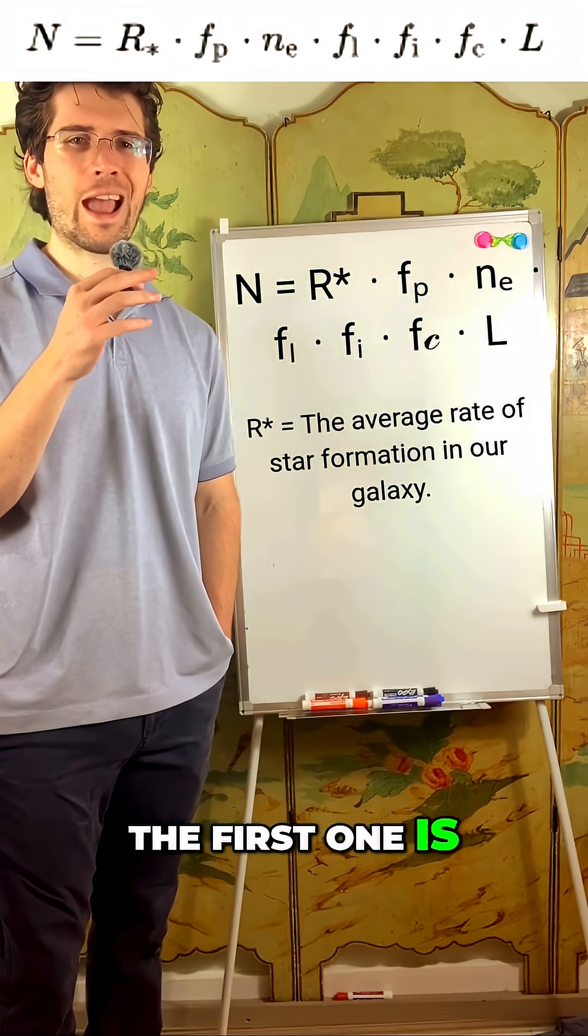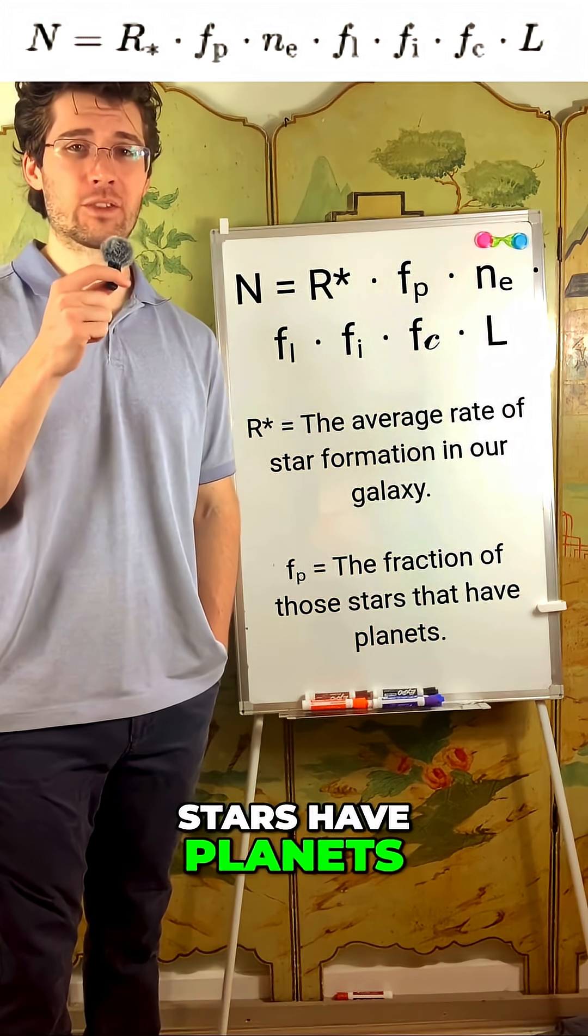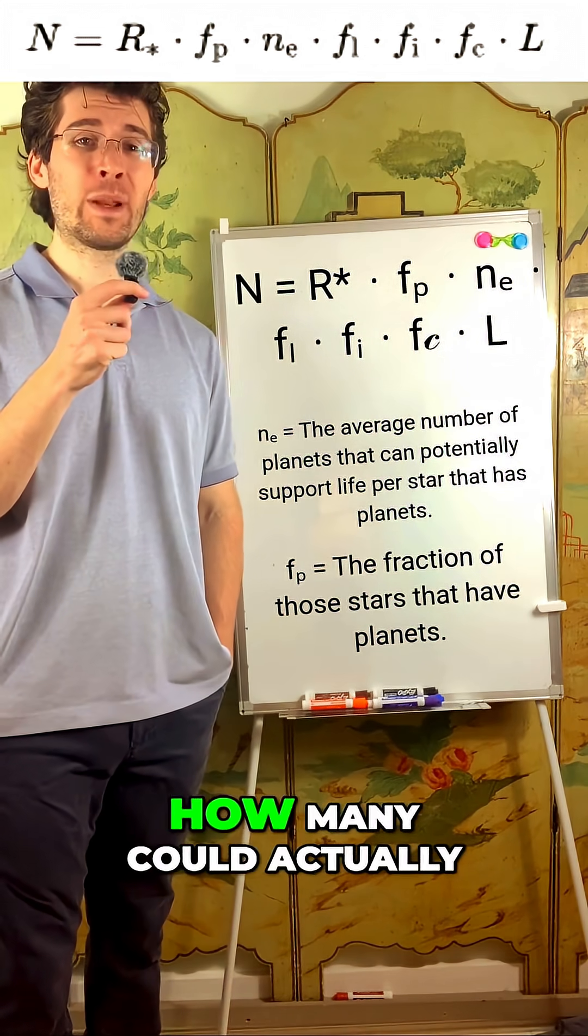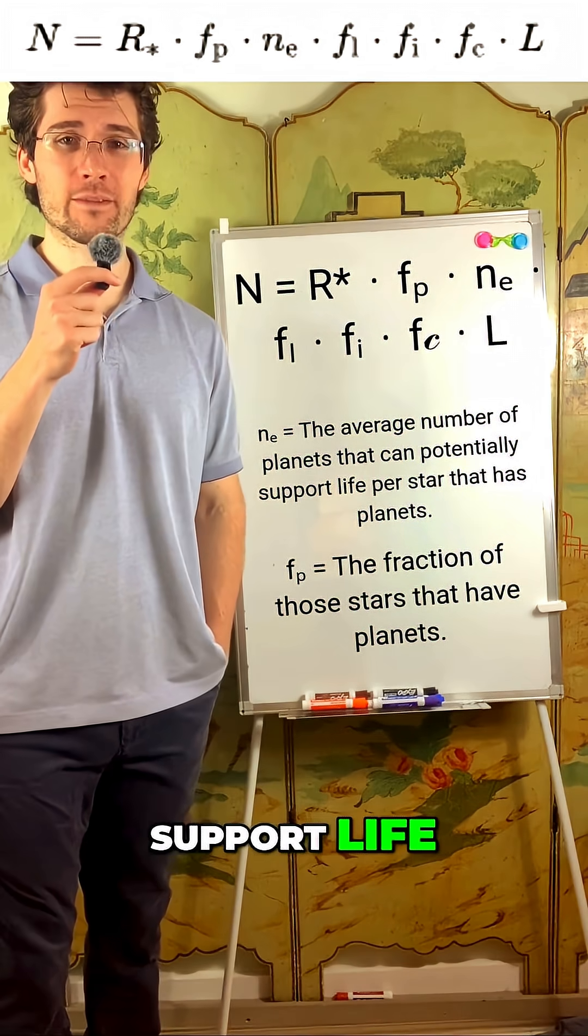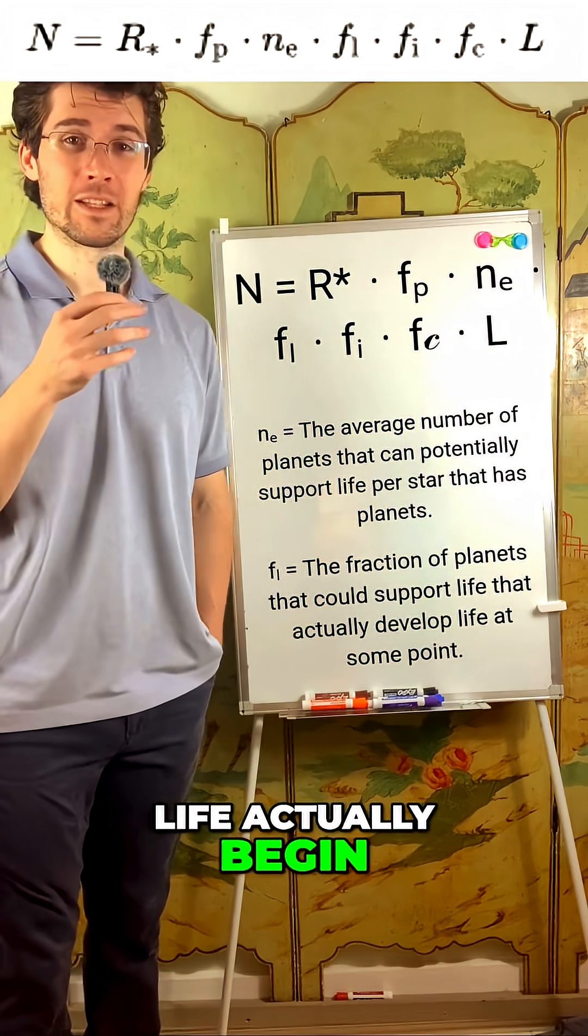The first one is, how fast are stars being born? Then, how many of those stars have planets? Of those planets, how many could actually support life? And on how many of those planets does life actually begin?